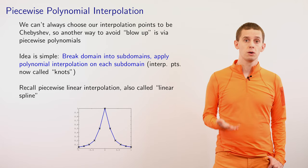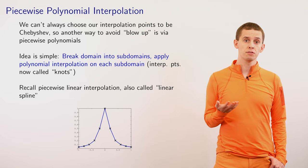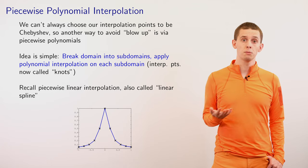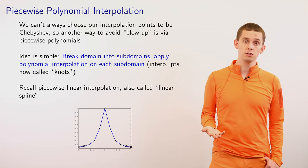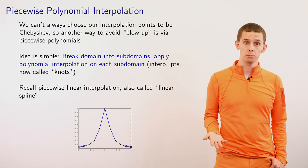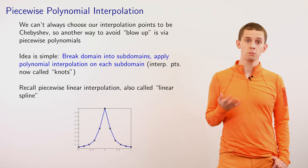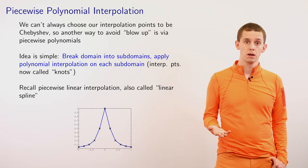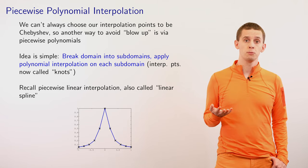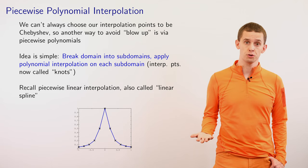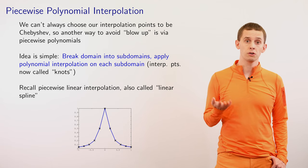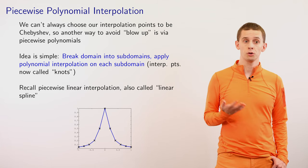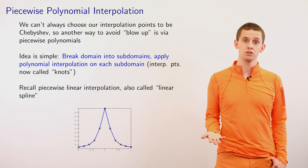In the previous videos we've looked at several different methods for doing polynomial interpolation, and we've seen a number of effective choices, such as Chebyshev interpolation, that works well across a broad range of functions. But we don't always have the freedom to choose our points to be Chebyshev distributed, and here we're going to look at an alternative interpolation method called piecewise polynomial interpolation.